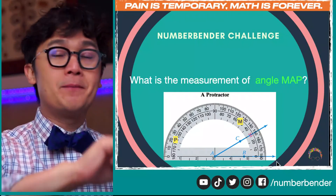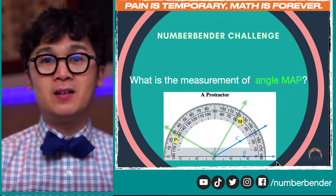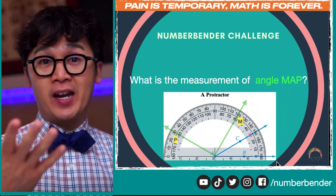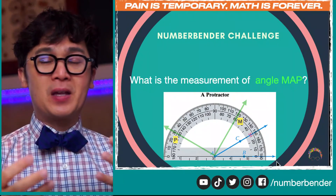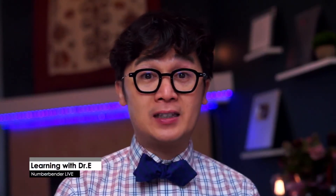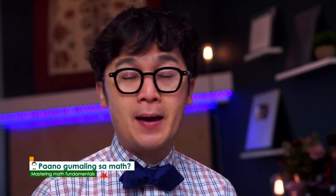Our number bender challenge of the day is for you to find the angle measurement of the green angle — angle MAP or angle PAM. This is a little different from the examples I shared, but I'm sure all of you will be able to solve it correctly. Comment down below! This is our lesson on angles in geometry. Remember, learning mathematics is like learning a foreign language — knowing the symbols, phrases, and words associated with problems involving angles in geometry will help you understand math better. This is Dr. E — see you again next time. Bye!